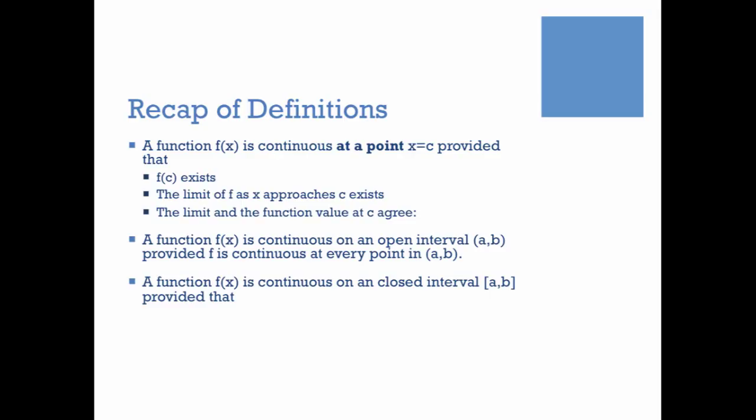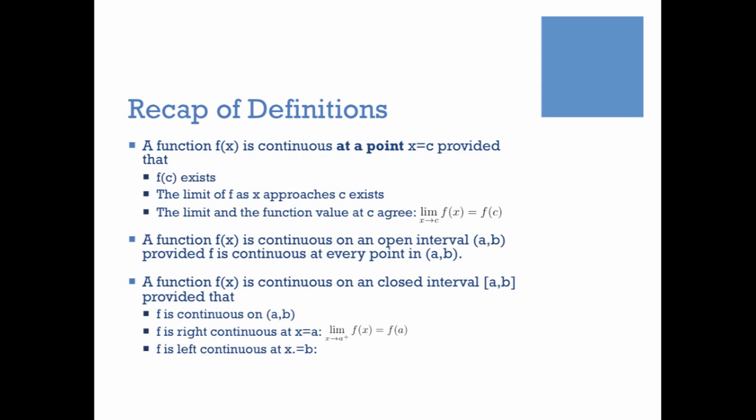For a closed interval, the definition gets a little bit trickier, because when you include the endpoint — like when you're at a — you can't go to the left of a, so you can't really ask about the two-sided limit there. We modified the definition: f should be continuous on the open interval from a to b, right-continuous at a, and left-continuous at b. In mathier notation, that means the right-hand limit at a matches f(a), and the left-hand limit at b matches f(b).